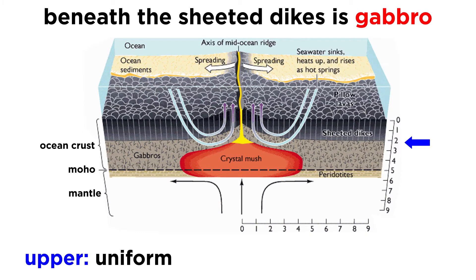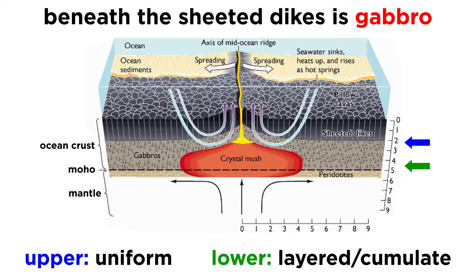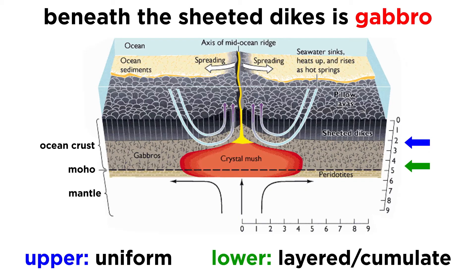The upper portion of the gabbro has a uniform structure, while the bottom portion displays a layered or cumulate structure, caused by dense crystals forming in the magma chamber and sinking down to the bottom.